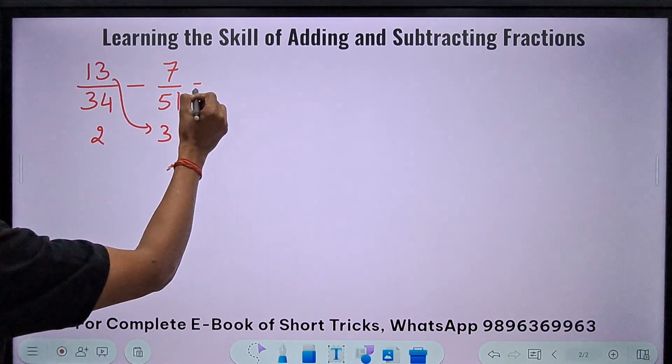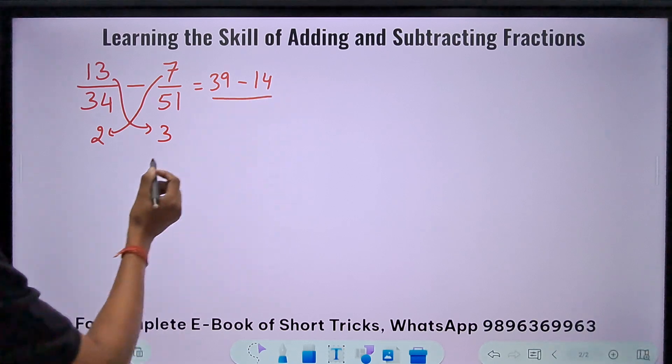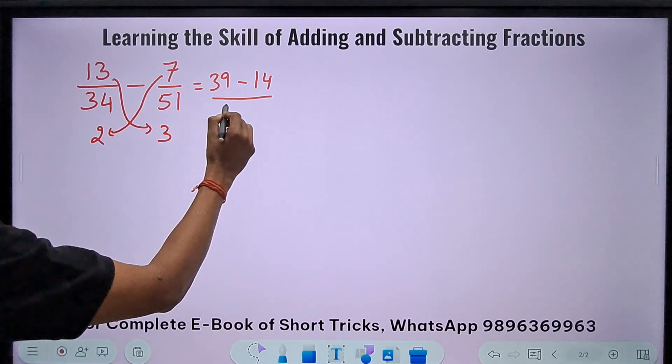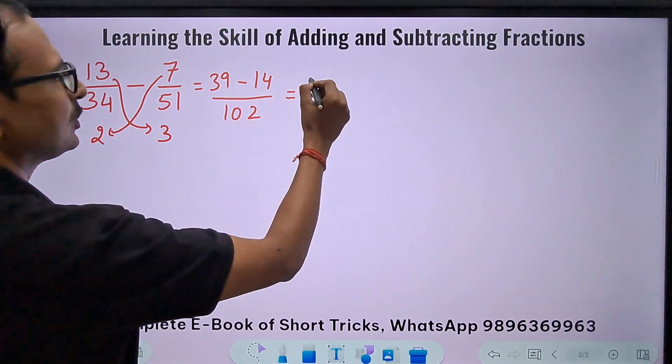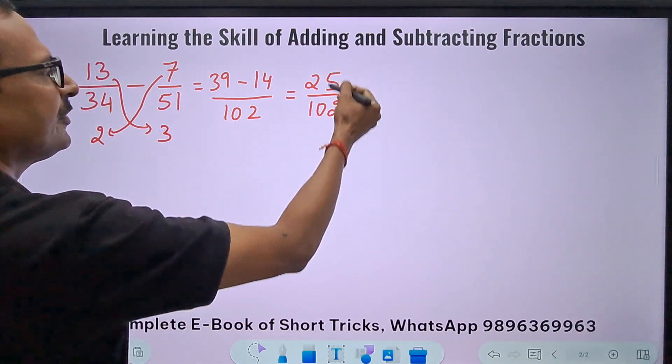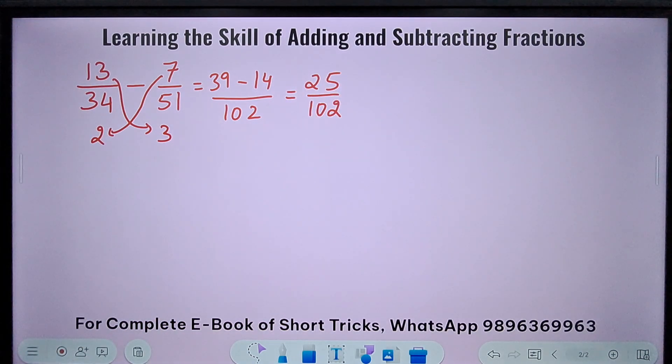Just do this: 39. Just do this: 14. And which one is easier? This one or this one? I think 51 double is 102. That is easier. So you get what? This is 25/102. Just check if there is a common factor. There is no common factor. This is your answer for the question.